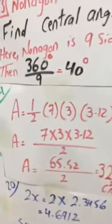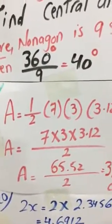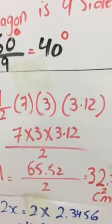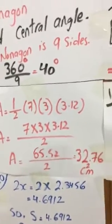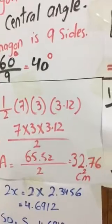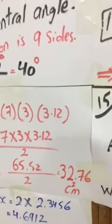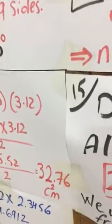So we will continue. We have a equals the area is 7 times 3 times 3.12 over 2. If you multiply these above the numerator it will be 65.52 divided by 2, so you will have 32.76 centimeter square.